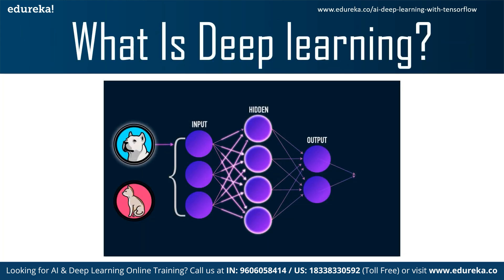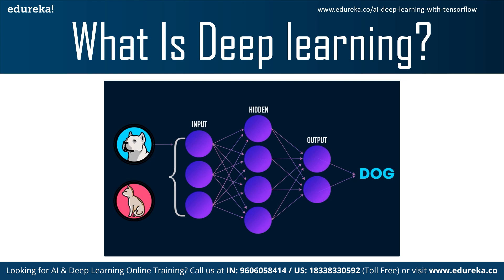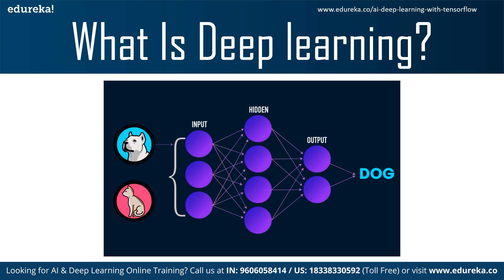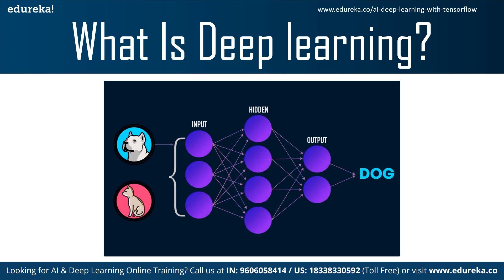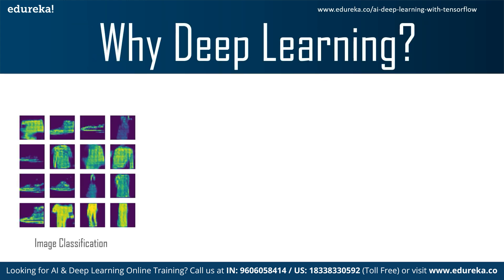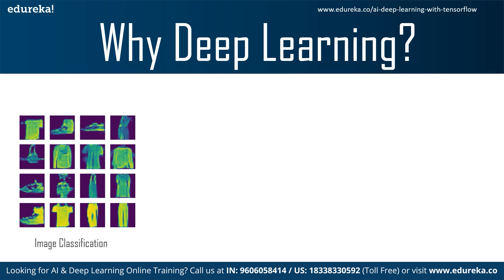Deep learning is part of a broad family of machine learning methods based on learning data patterns, as opposed to what a standard machine learning algorithm does. In machine learning we have algorithms for a specific task, whereas deep learning algorithms can be supervised, semi-supervised, or unsupervised. As mentioned earlier, deep learning is inspired by the human brain and how it perceives information through the interaction of neurons. The big advantage of using deep learning is that we can extract more features.